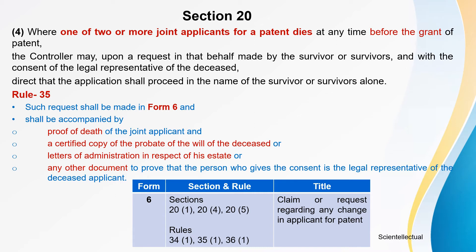Subsection 4 under Section 20: where one of two or more joint applicants for a patent dies at any time before the grant of the patent, upon request made by the survivor or survivors and with the consent of the legal representative of the deceased, the controller may direct that the application should proceed in the name of the survivor or survivors alone. The relevant rule is Rule 35.